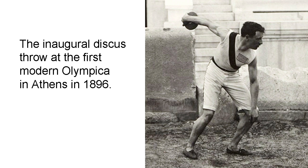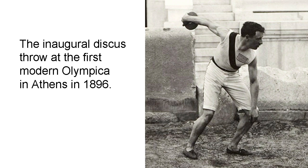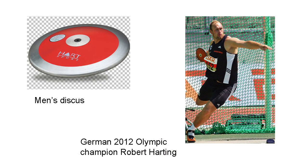Shortly after, the modern technique of rotating the whole body through one and a half turns before release was introduced by the Czech athlete Frantisek Jandesuk, after studying the statue of Discobulus, and used by him in winning Olympic silver at the Games in 1900. Today's discus is smaller and lighter than that used by the ancients — 22cm in diameter and 2kg in weight in the case of the men's discus.